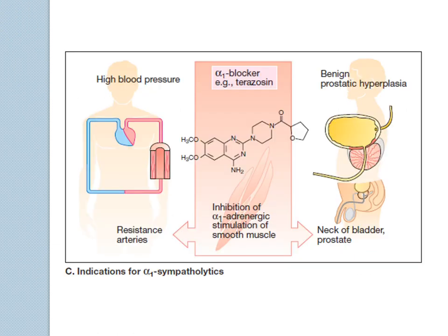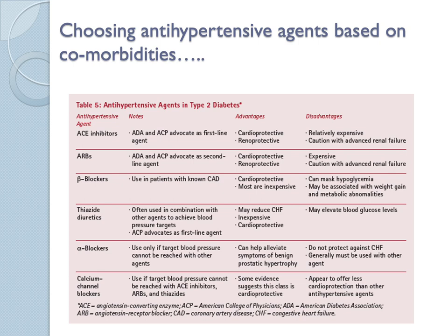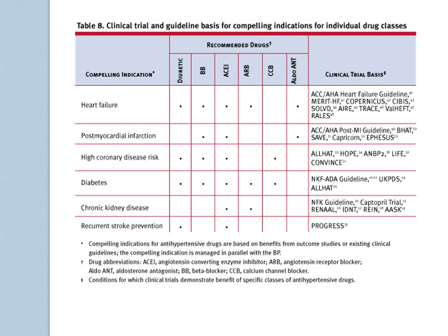How and why we choose a certain drug for a certain patient — one of the reasons is based on the comorbidity the person has. ACE inhibitors and ARBs have cardioprotective and renal protective effects. Therefore they can be used for people who already have some renal conditions, but if it's advanced renal failure you can't use them because they affect kidney blood flow. You might want to add drugs one by one, but there's also evidence that if pressure is too high you can start with two drugs at the same time, while still monitoring the patient.